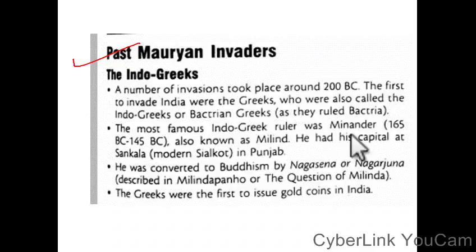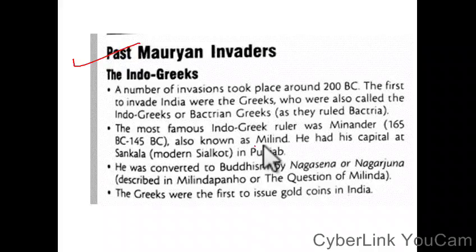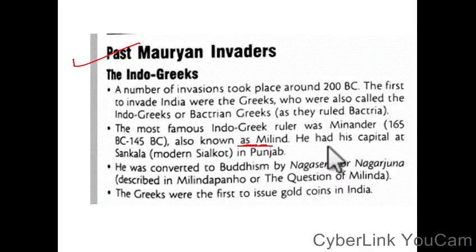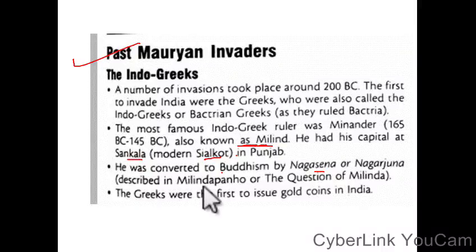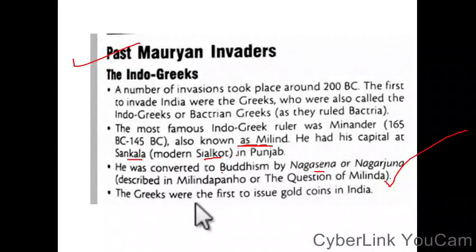The most famous Indo-Greek ruler is Menander, ruled from 160 BC to 145 BC. He had his capital at Sakala, modern Sialkot in Punjab. He was converted to Buddhism by Nagasena, described in the Milindapanho, or the Questions of Milinda.